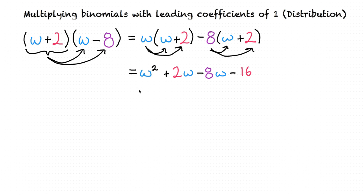This gives us w squared plus two w minus eight w minus sixteen. It's important to remember that when we distribute this eight here, we're also distributing this minus sign with it, which is why this becomes minus eight w and minus sixteen, because two times negative eight is negative sixteen.